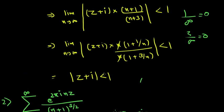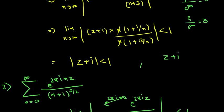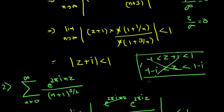If you're asked the interval of convergence, it will be: z+i is greater than -1 and less than 1, so z is greater than -1-i and less than 1-i. But this was not asked.